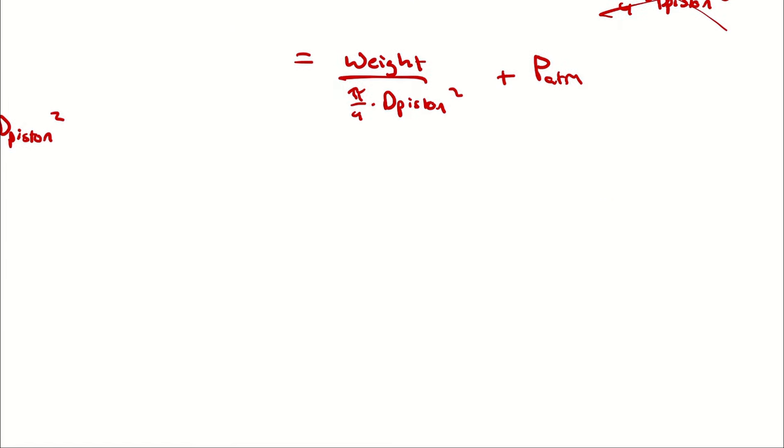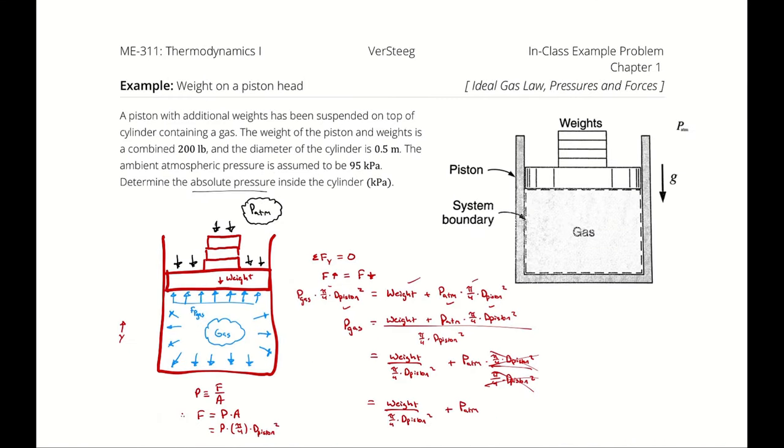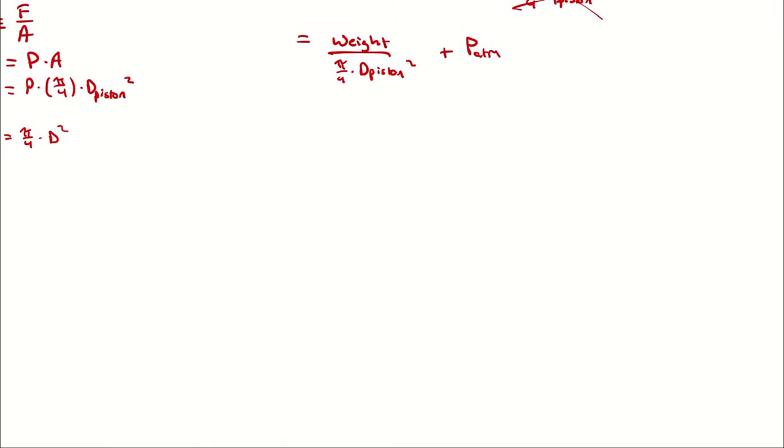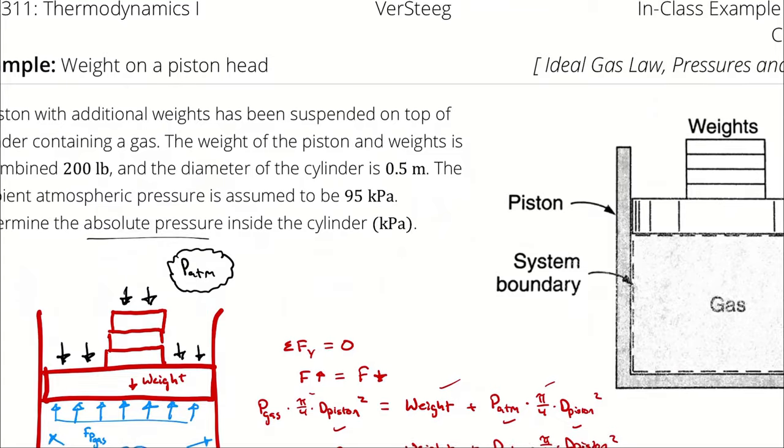Anyway, now it's time to do some math. The weight of our weight is 200 pounds. I know that's going to be pound force because it's described as a weight, but note that if we assume standard gravity, it could also be pound mass, and the force exerted by 200 pound mass at standard gravity would be 200 pound force. That's the convenience of the pound mass instead of slugs. Hashtag slugs are the worst. So, 200 pounds of force divided by pi over 4 times the diameter of the piston, which was half a meter.